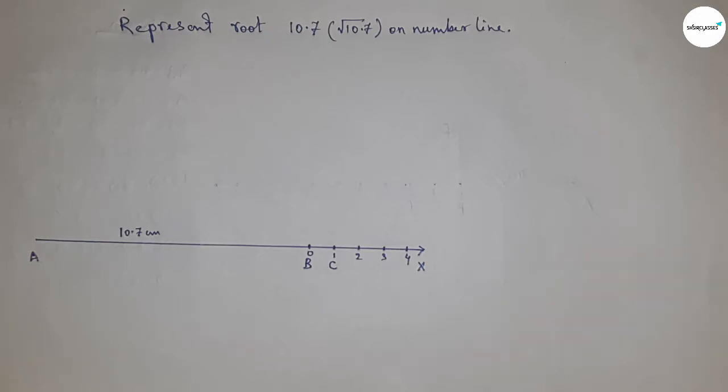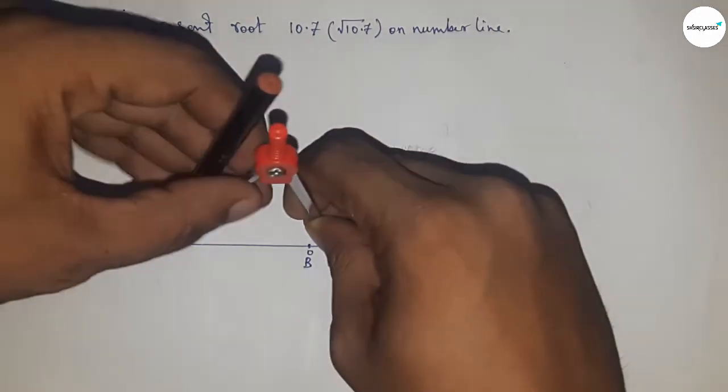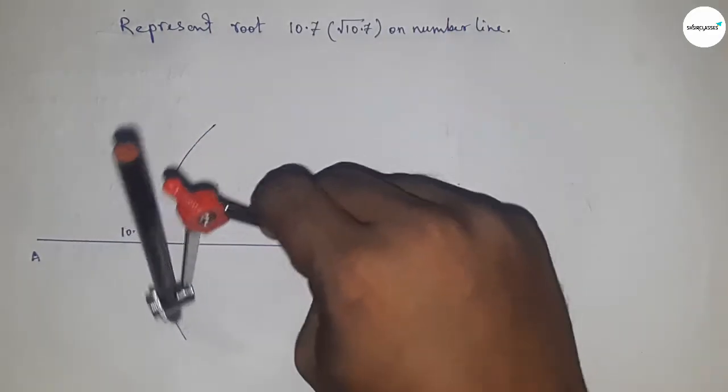Now I'm going to bisect the line AC. So taking greater than half of AC and drawing arcs by this way with same length.